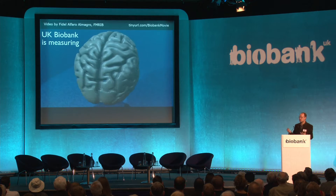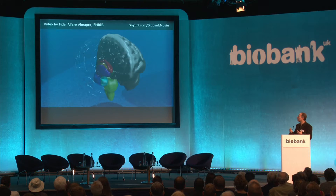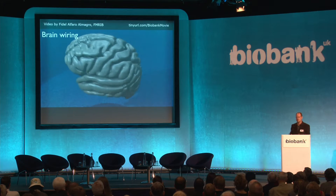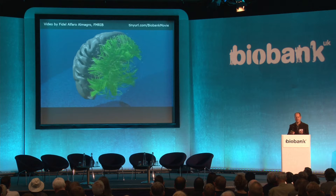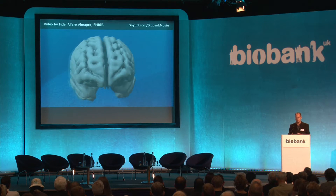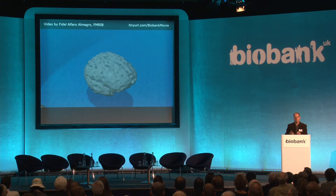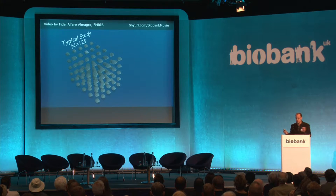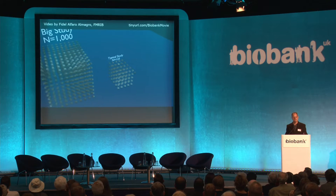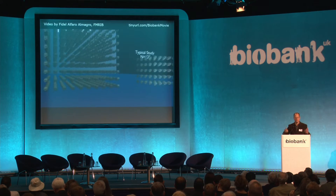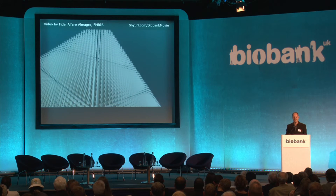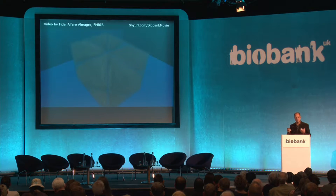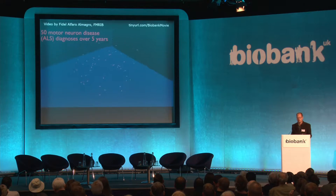I'm going to start with a video showing you the richness of brain imaging data. We can get anatomy and volumes of substructures in the brain. We can find out where activity is going on during a task and how things are connected together in networks, and we can find out about the wiring of the brain. In a typical individual lab study you might have up to maybe 125 subjects — that would actually be really quite large. Then there are some publicly available datasets of about 1,000 or 2,000, and then there's Biobank.